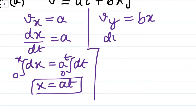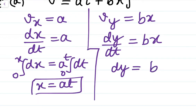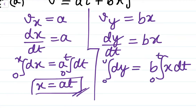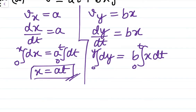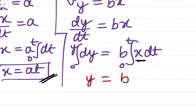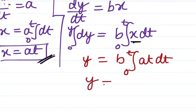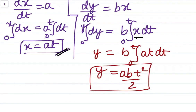Now for vy: dy/dt = bx, so dy = bx dt. Since b is a constant but x is variable, we substitute x = at to get dy = b·at dt. Integrating from 0 to t gives y = abt²/2. So we have found how both x and y coordinates depend on time.